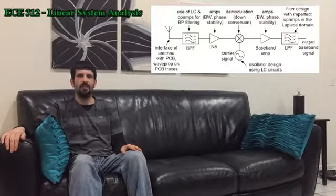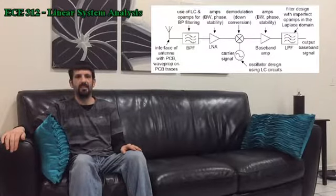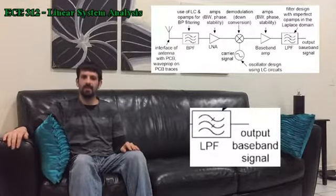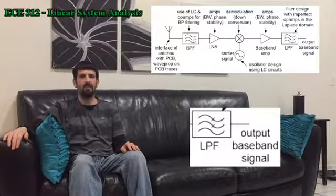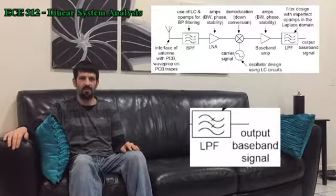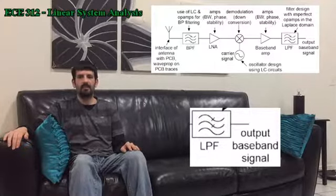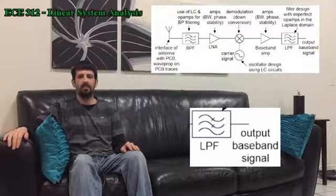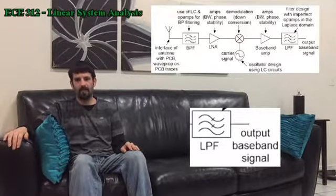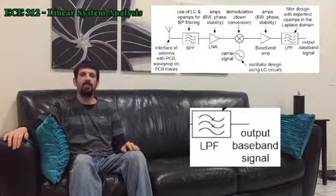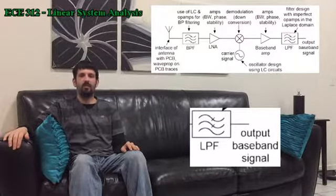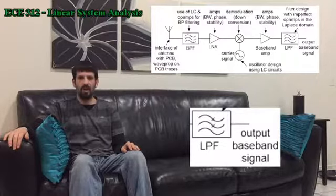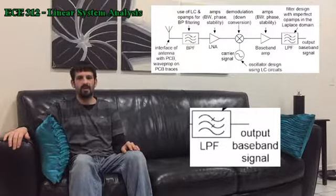The last stage of the baseband backend is the low-pass filter. As described earlier, a low-pass filter will remove all signals with frequencies higher than the designed cutoff. So the low-pass filter removes all higher-order harmonics of the signal that were created in the mixer and the baseband amplifier. The output is the desired signal with little to no noise and almost none of the extra harmonics, ready for analog-to-digital conversion.